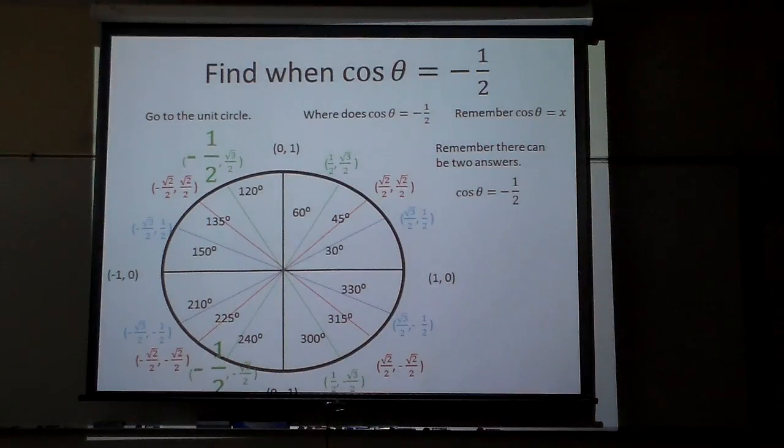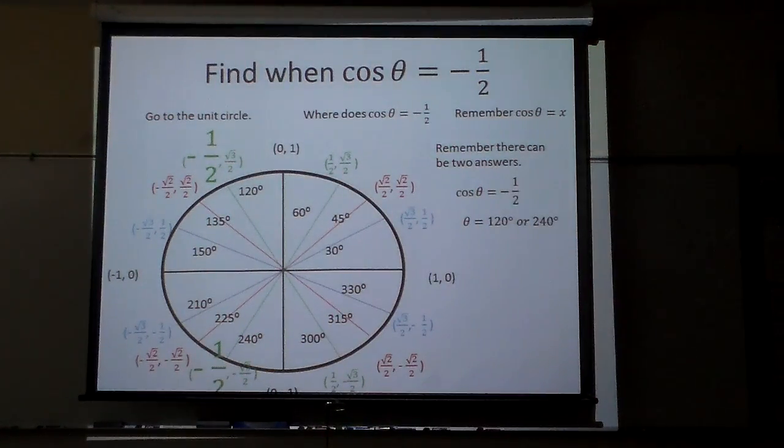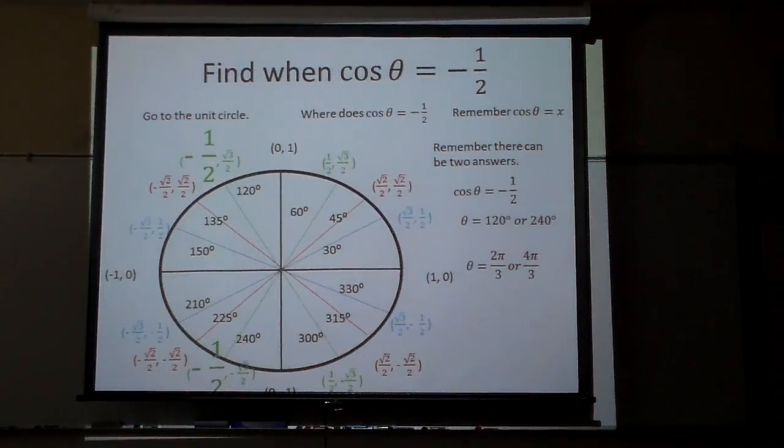So therefore, cosine of negative one-half is, it occurs at what? 120 or 240 degrees, or if we made it into radians, it would be what? 2 pi over 3 or 4 pi over 3. Those are the two times that cosine is negative one-half.